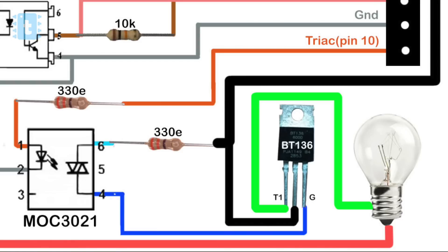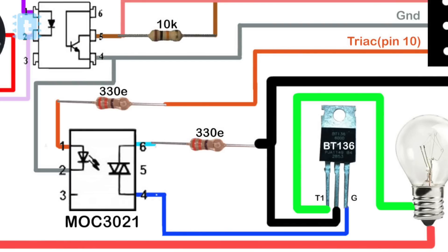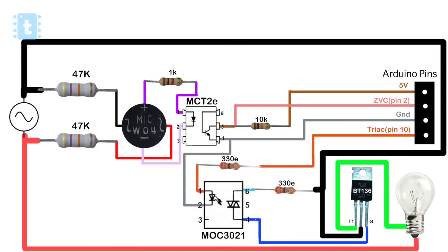Now to drive this TRIAC we will need one driving IC which is MOC3021. This IC will take signal from our Arduino board and drive the TRIAC accordingly. So this was all about the circuit diagram and the components.